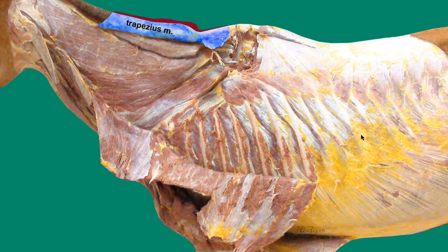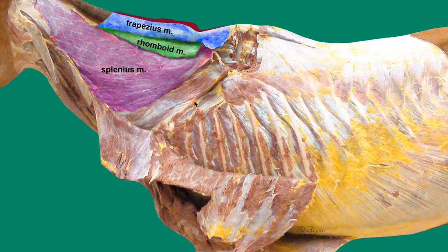Here highlighted in blue is the cervical part of the trapezius muscle, moved dorsally so we can see it. Highlighted in green is the cervical part of the rhomboid muscle. The next muscle is the splenius muscle, which originates from the nuchal ligament and from the spinous processes of the first three to five thoracic vertebrae, and inserts to the head and to cervical vertebrae one through five, but not number two.